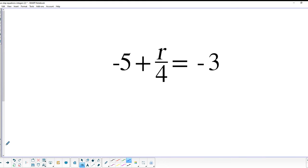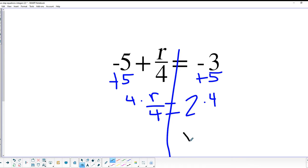Okay, we've got negative 5 plus r over 4 equals negative 3. Let's add 5 to both sides. And so we're left with r over 4 equals negative 3 plus 5 is 2. And now we're going to multiply both sides by 4. So our final answer is going to be r equals 2 times 4, which is 8. Excellent.